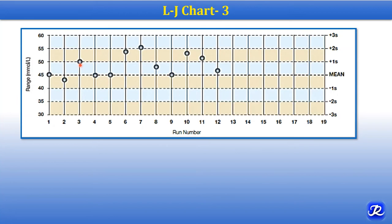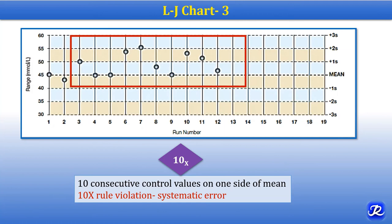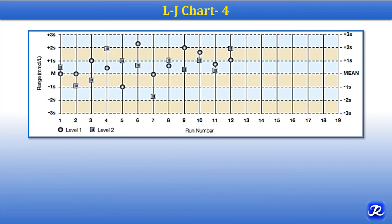In this LJ chart, from the third run, all measurements are on one side of the mean. If you count, there are 10 values. This denotes the 10X rule, because 10 consecutive control values are on one side of the mean. This is a 10X rule violation, which shows systematic error.